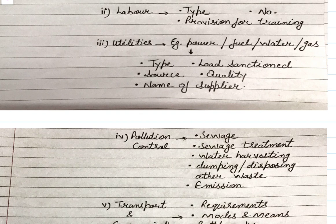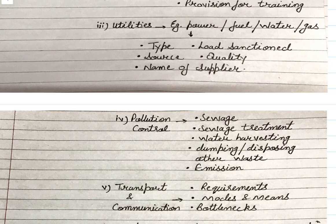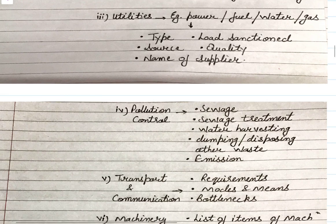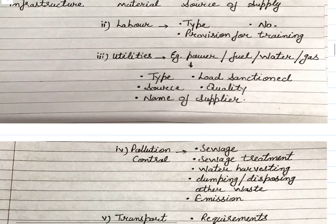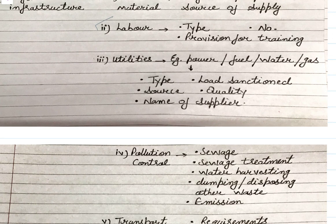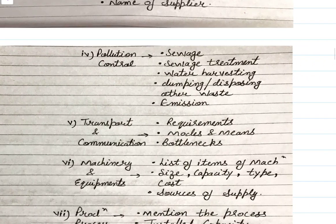You need to specify the source of utilities, the quality required — what quality of water, what fuel, how much power — and the supplier's name if possible. These are the third element under physical infrastructure. So far under physical infrastructure we have covered: raw material, labor, and utilities.